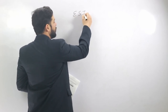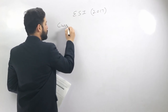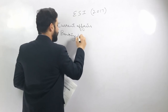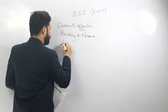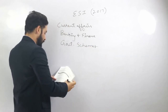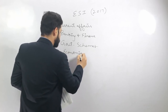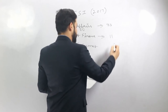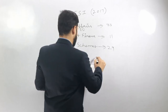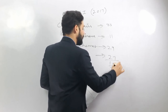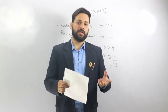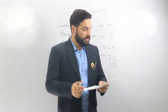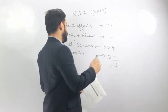In 2017, the exam pattern was as follows: from current affairs there were 33 marks, from banking and finance there were 11 marks, then 29 marks from government schemes and 27 marks from economics — totaling 100. There were 35 questions of 2 marks and 30 questions of 1 mark.